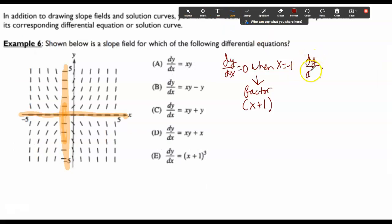And we saw that dy over dx equals 0 when y equals 0. So this means that one of our factors is just a y.